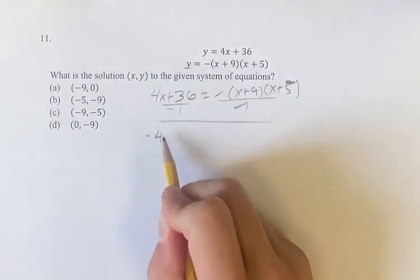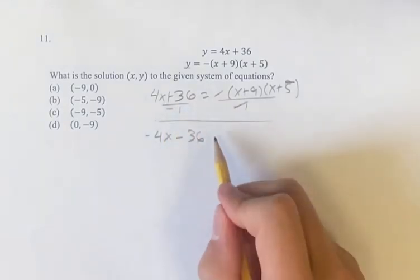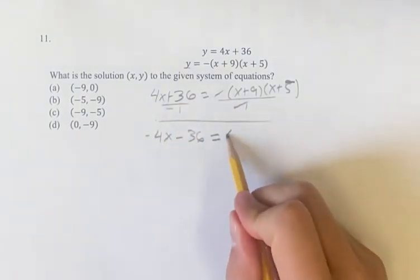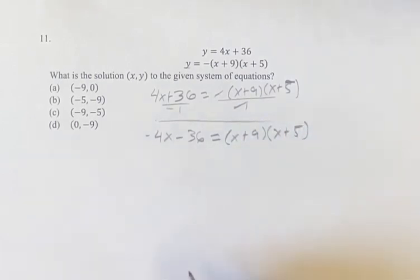On this side we'll have negative 4x minus 36, dividing both of those by negative 1. On this side we'll have x plus 9 times x plus 5. This is going to be a little bit easier to solve.